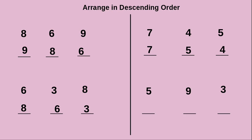Next we move to another example. They have given 5, 9, 3. Which one is the greatest here? 9 is the greatest number, so we write 9 first. After that the next is 5. At last, 3 is remaining. Now we have arranged these numbers in descending order.